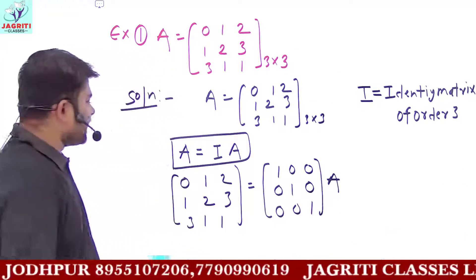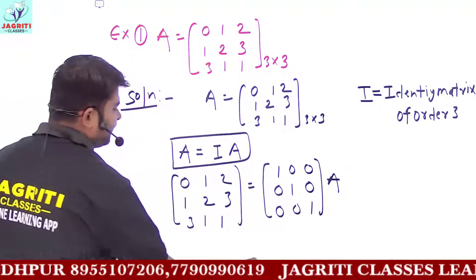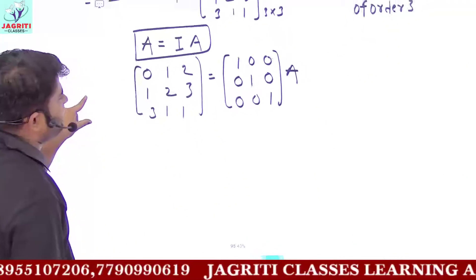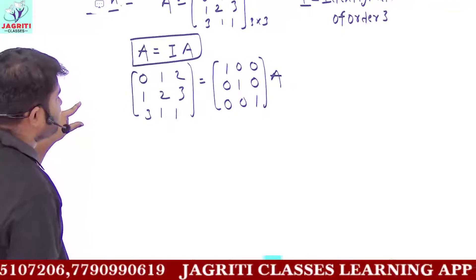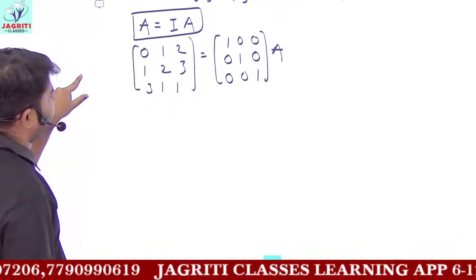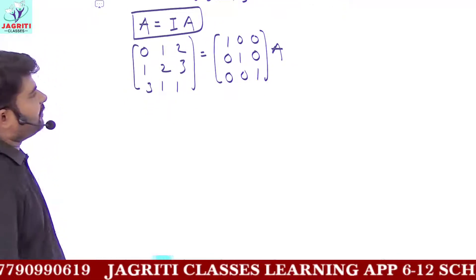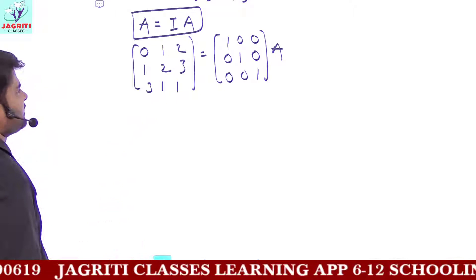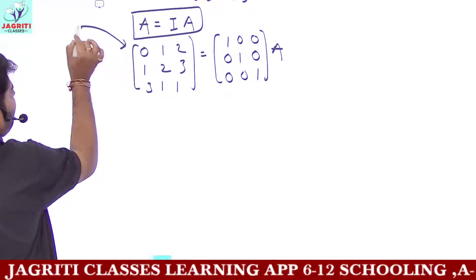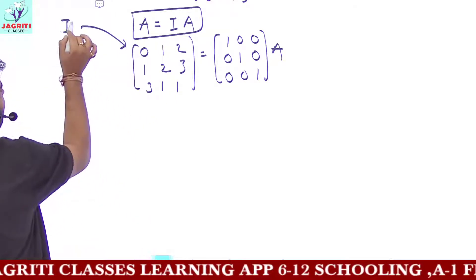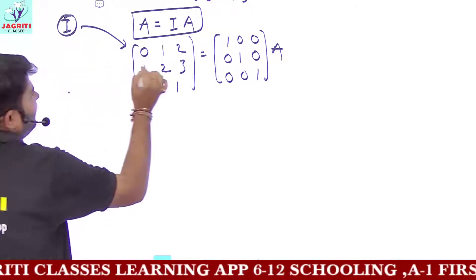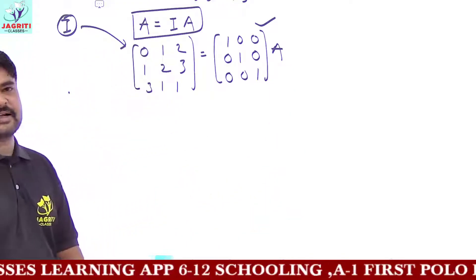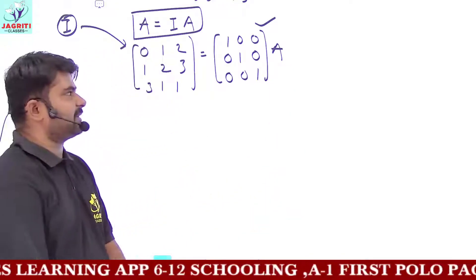Now here one thing to keep in mind: the matrix we have taken on the left hand side — we have to convert this matrix to the identity matrix using elementary operations. And those same elementary operations we will also apply to the identity matrix on the right hand side.